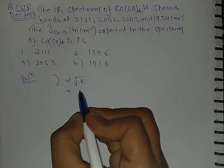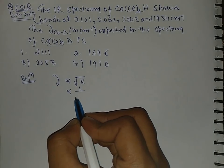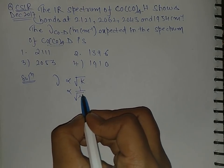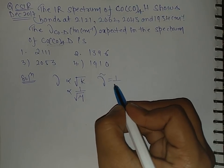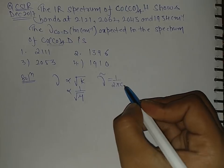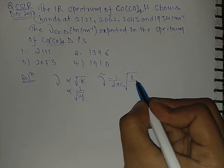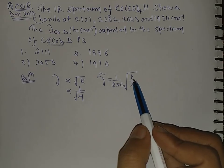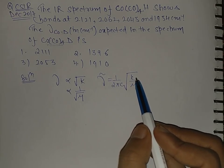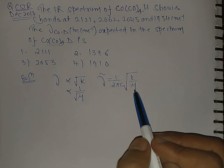Now the vibrational frequency is directly proportional to the root of bond constant and inversely proportional to the root of reduced mass. By the formula, nu equals 1 over 2 pi c times the square root of k over mu.